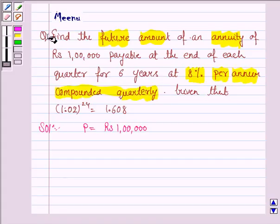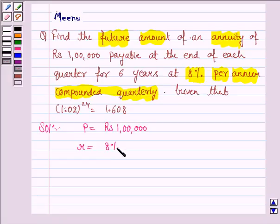R is 8% per annum compounded quarterly, so we need to multiply it by 1/4. This is equal to 8/100 × 1/4, which equals 0.02 quarterly.